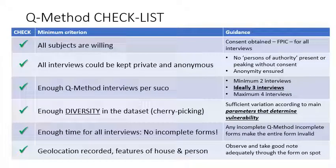A quick checklist for the Q method. First, all subjects being interviewed must be willing and must provide consent. This consent is called FPIC — Free Prior Informed Consent — and this goes for all interviews. All interviews must be kept private and anonymous, without the presence of persons of authority, or without their consent. Anonymity must also be ensured. Third, enough Q method interviews per SUCO: our guidance is a minimum of two interviews, preferably three per SUCO, maximum four. We say maximum four because there may not be enough time to conduct more — but if you feel you can conduct more than five, go ahead.